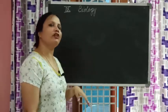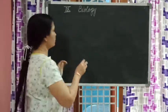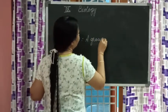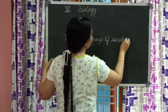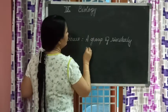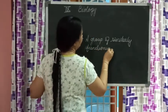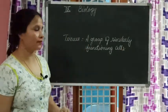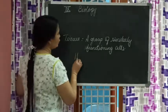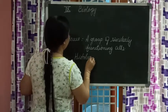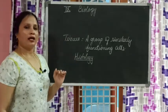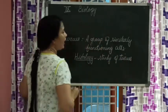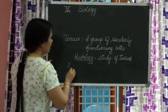A group of similarly functioning cells — what do we call them? We call them tissues. Tissues are a group of similarly functioning cells. The study of tissues is called histology. A major contribution in the field of histology was made by Nehemia.